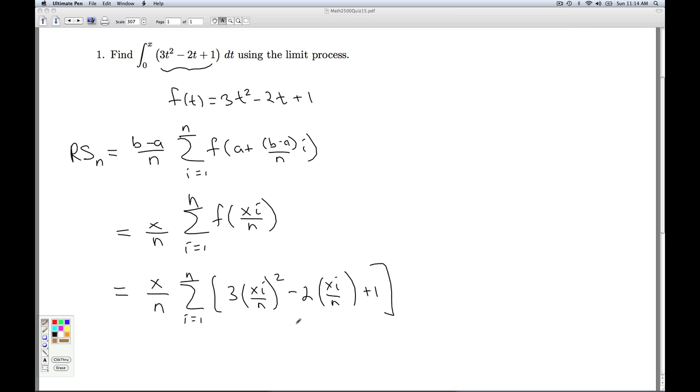And I want to use properties of sums to simplify this and rewrite this as a function of n, ultimately with the goal of taking n to infinity. So I get x over n times, and using properties of sums, I can break this up. Sum i equals 1 to n of 3 times xi over n squared minus the sum i goes from 1 to n, 2 times xi over n plus the sum i goes from 1 to n of just 1.